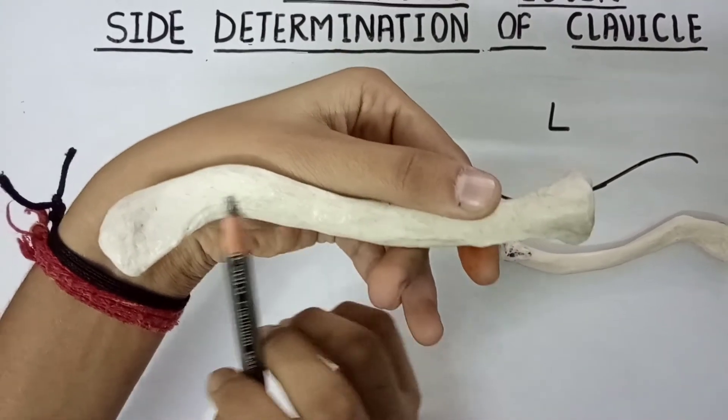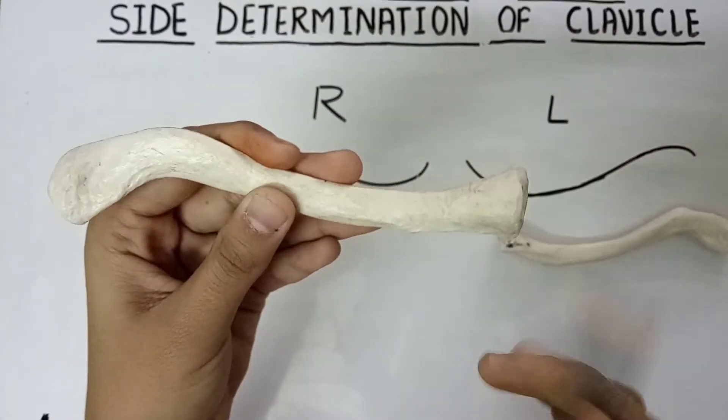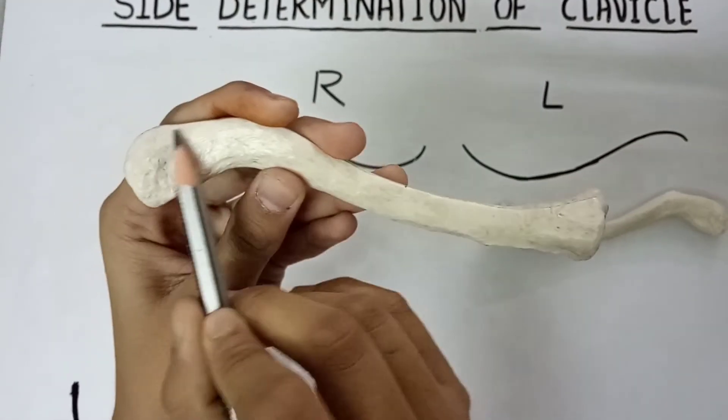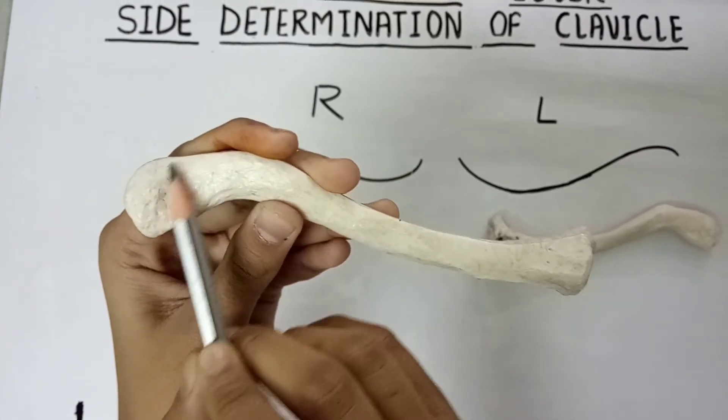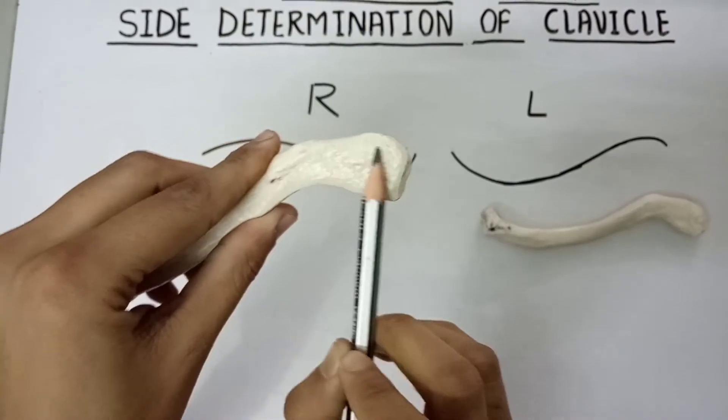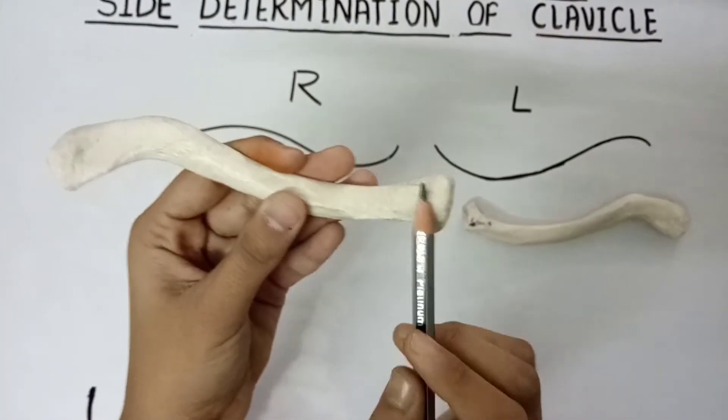And the second thing you should know is that the superior surface of the lateral end is smoother, and the inferior surface of the lateral end, as you can see, is rough here. So these two things you should know.